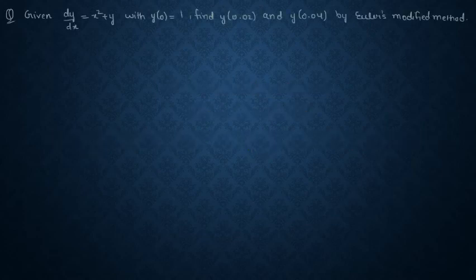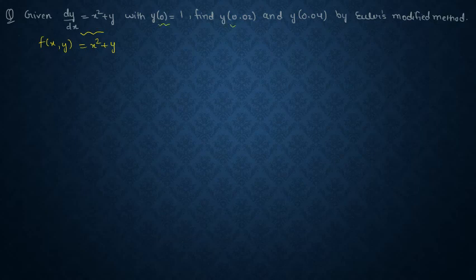So here dy/dx is given to you. You already know from my previous videos that this is the form of f(x,y). It is already given to you. Now at x₀, y is 1 and you need to find out y for x as 0.02, 0.04 by Euler's modified method.